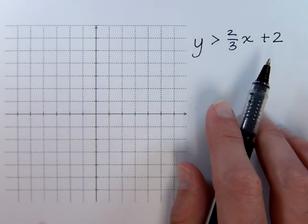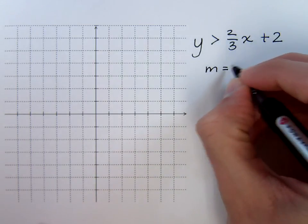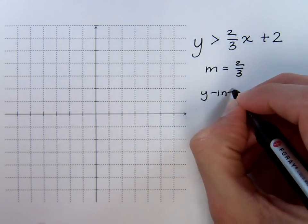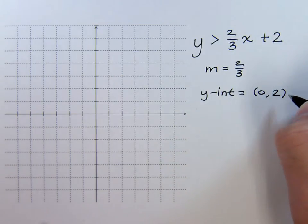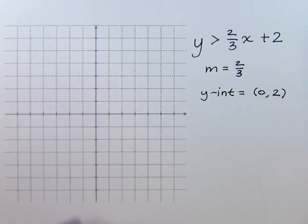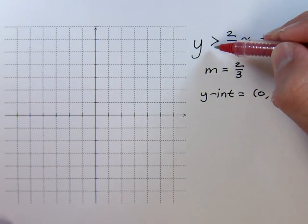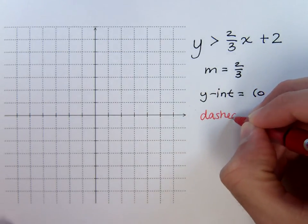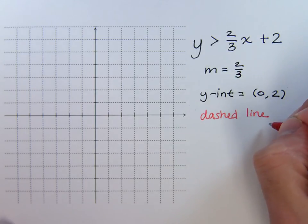We graph these just like an equation. Now if this were y equals, we could easily identify the slope as being two-thirds and the y-intercept as being the ordered pair zero, two. That's great, but there's more information to get from this in terms of the graph. Since this is just greater than but not equal to, that means we are going to have a dashed line, so any points that we plot on the line will have to be open circles.